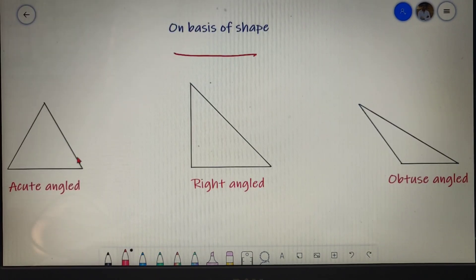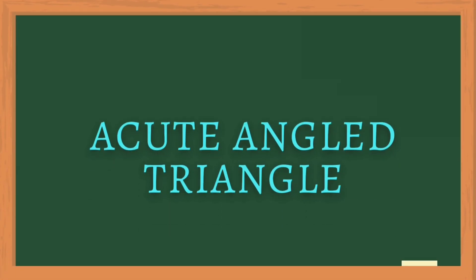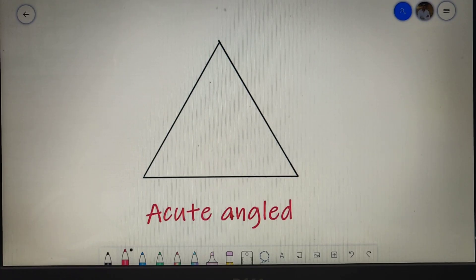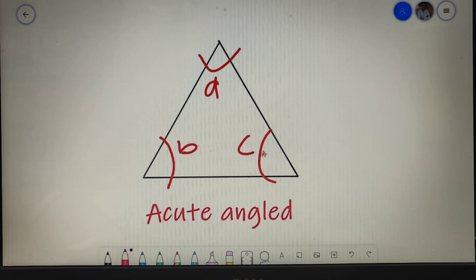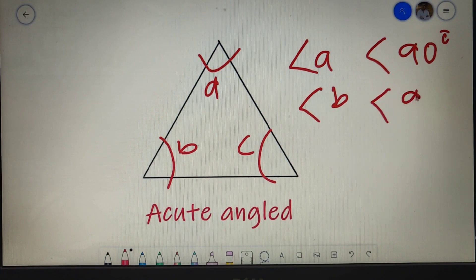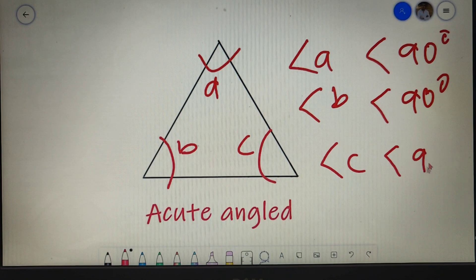On the basis of angles we have three types of triangle: acute angle triangle, right angle triangle, and obtuse angle triangle. For an acute angle triangle, there is only one property: none of the angles are greater than 90 degrees, meaning all three angles are less than 90 degrees — angle A < 90°, angle B < 90°, and angle C < 90°.